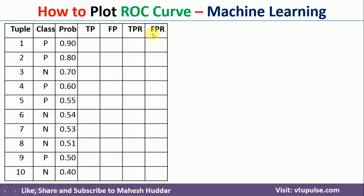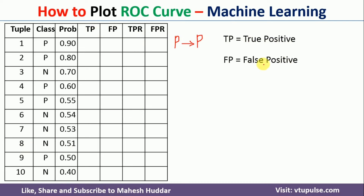To calculate TPR and FPR, we need to know two more parameters. What is TPR? TPR is nothing but true positive. What is true positive? Let us assume that the actual class is positive and it is classified as positive — that is nothing but a true positive. The second one is false positive: that is nothing but the actual class is negative but it is classified as positive.